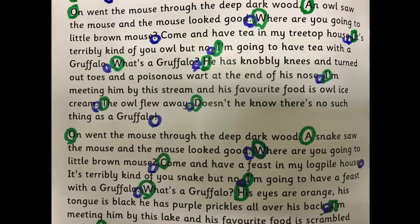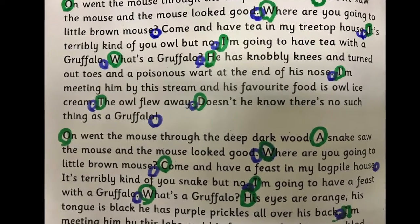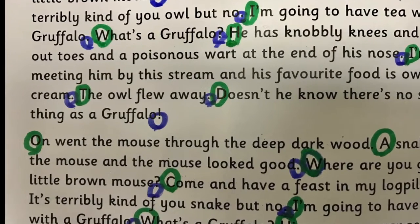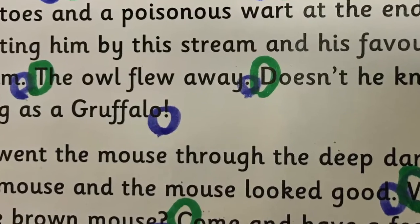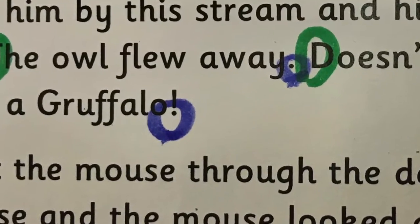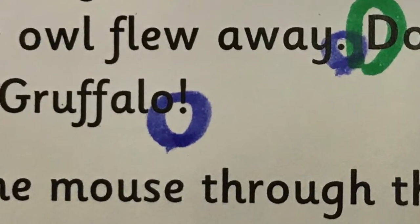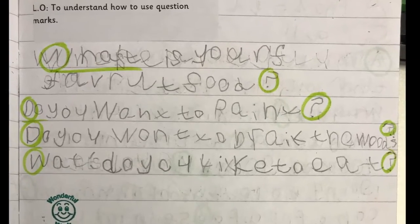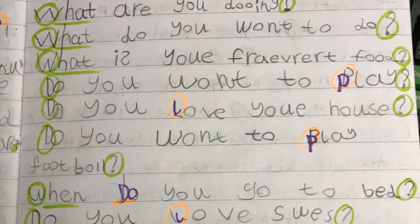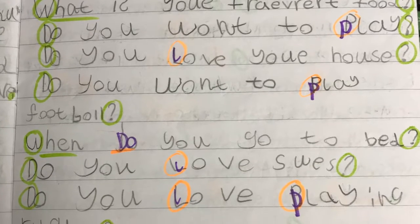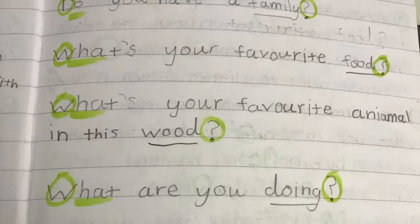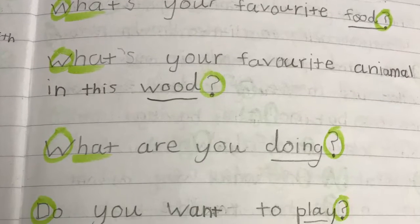The main focus of this unit was to introduce exclamation marks and question marks, so firstly we hunted for these in the text. Next, the children wrote a list of questions that they wanted to ask the Gruffalo. We dressed up a child in a Gruffalo costume and used hot seating.